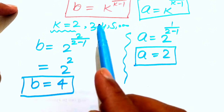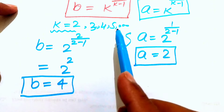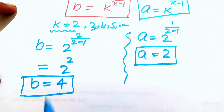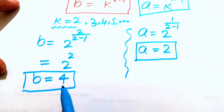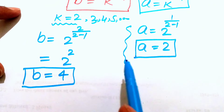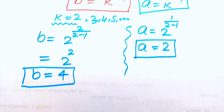Similarly, substituting k equals three, four, five, and so on gives different values of a and b. This is the final answer. Thank you so much for watching this video — please subscribe to my channel for more exciting videos.